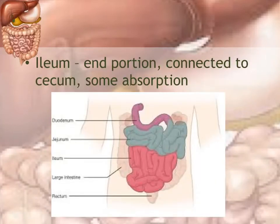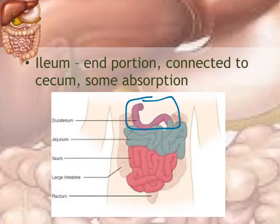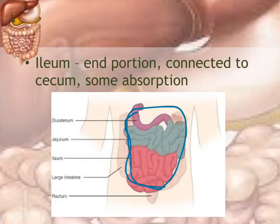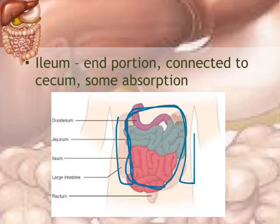The last portion connected to the large intestine is the ileum, and there is some absorption going on in the ileum. In the diagram, the duodenum is shown in purple, the jejunum in teal, and the ileum in pink. The small intestine is located in the lower abdominal area — what we mostly refer to as the belly. Pain around the umbilical or navel region is the small intestine. Surrounding the outside of the small intestine is the large intestine.